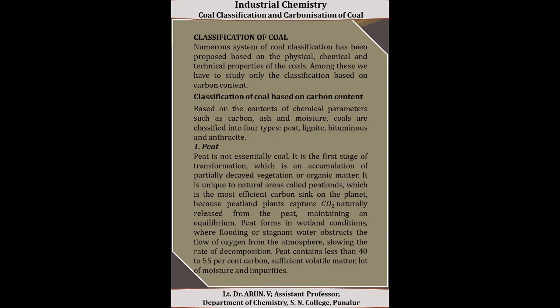The first type is peat. Peat is essentially not a coal — it is the first stage of transformation, being an accumulation of partially decayed vegetation or organic matter. It is unique to natural areas called peatlands, which are the most efficient carbon sink on the planet, because peatland plants capture CO₂ naturally released from the peat, maintaining an equilibrium. Peat forms where flooding or stagnant water obstructs flow, slowing the rate of decomposition. Peat contains around 40 to 55% carbon along with sufficient volatile matter.